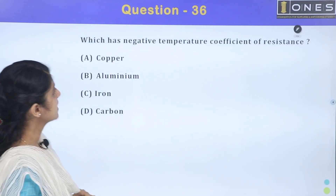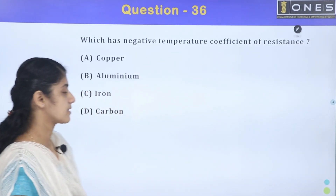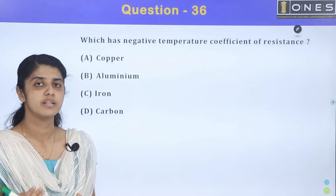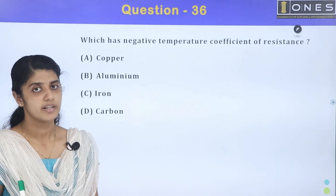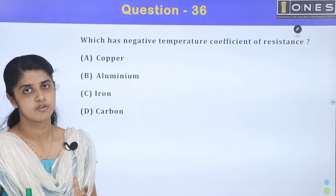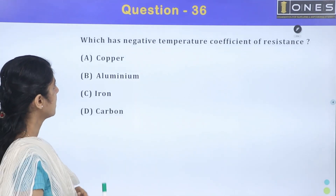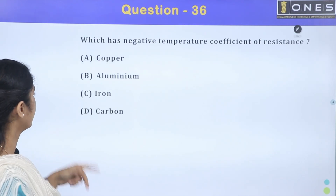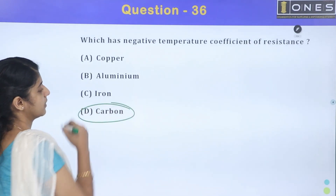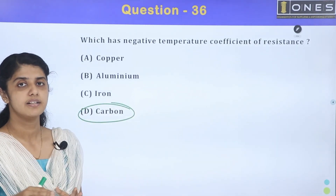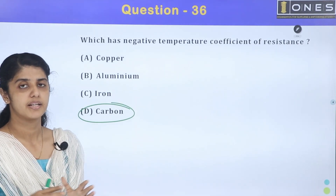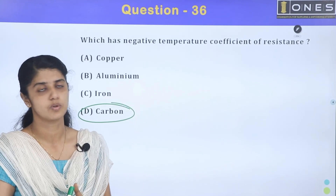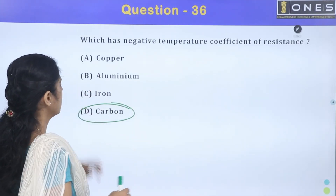Next question: which has a negative temperature coefficient of resistance? The options are copper, aluminum, iron, and carbon. Semiconductors have a negative temperature coefficient. Other materials like copper have a positive temperature coefficient. The answer is carbon.